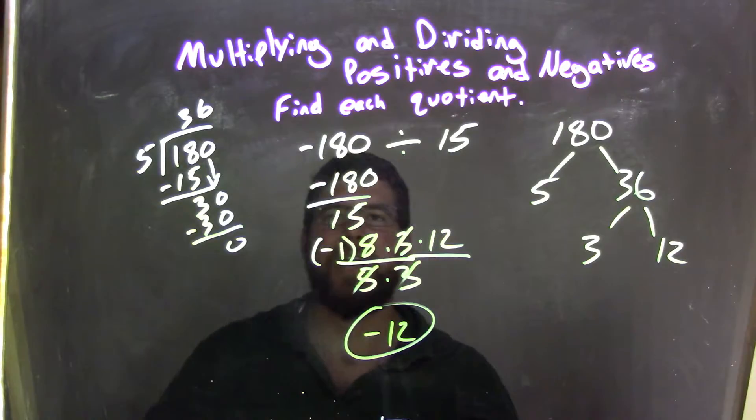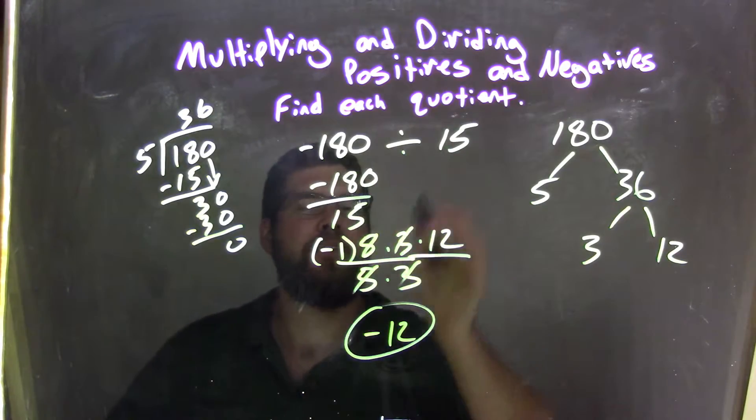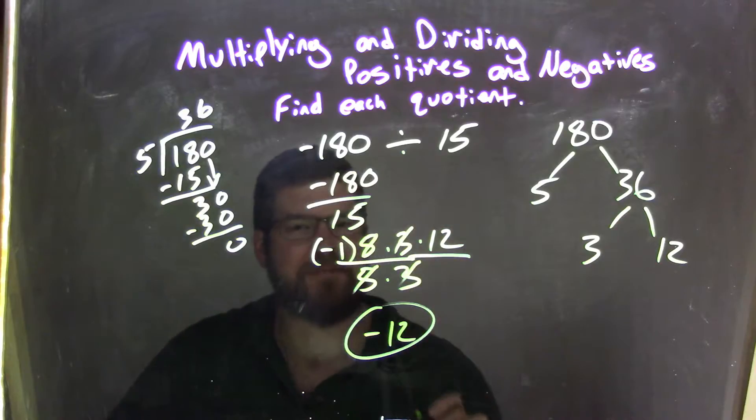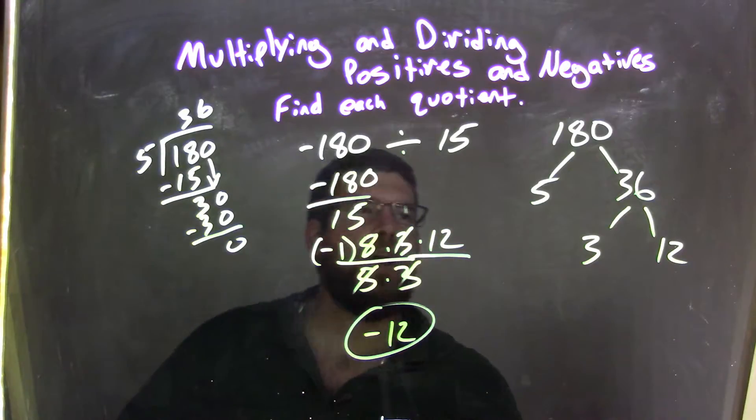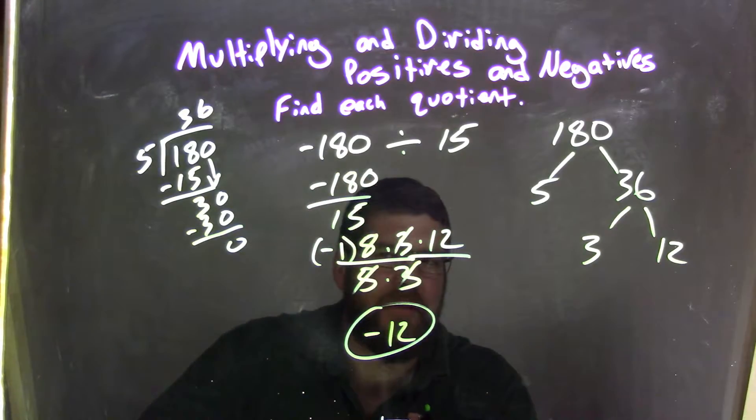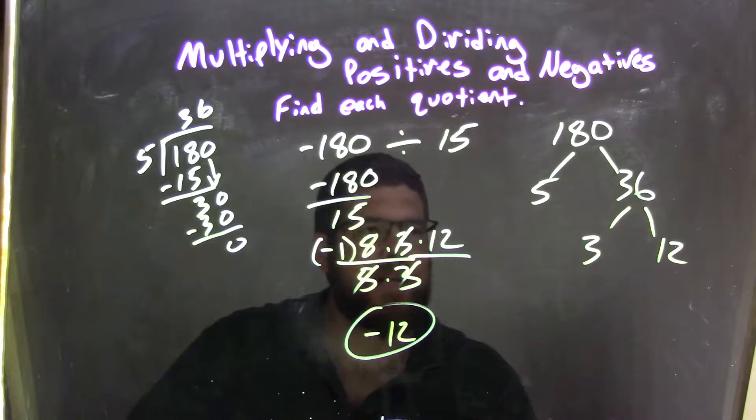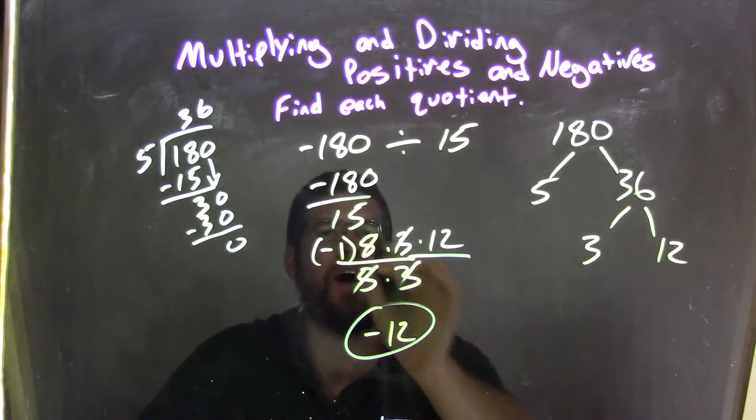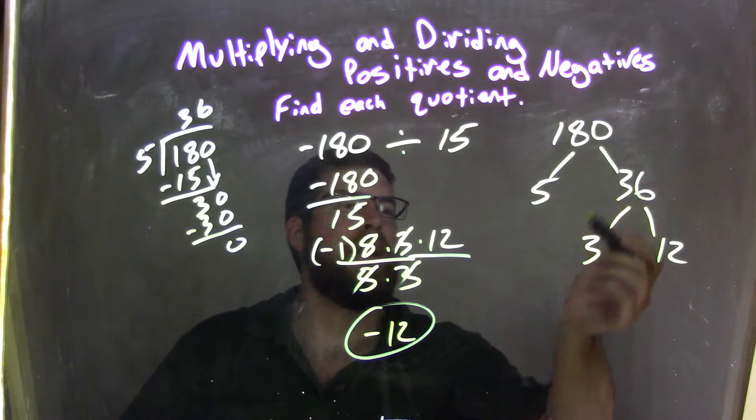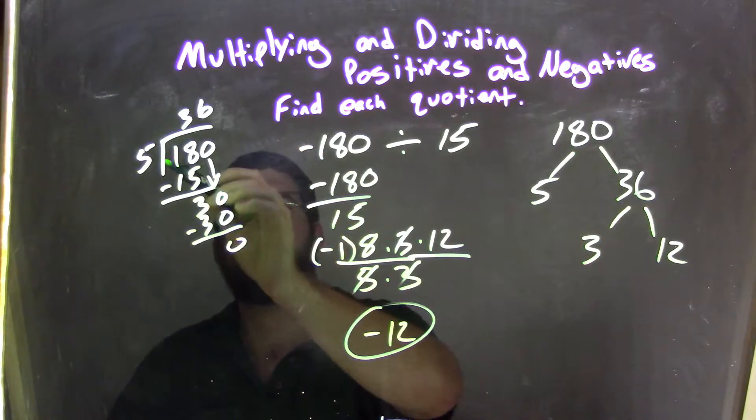So again, let's recap. We have negative 180 divided by 15. I like to write that as a fraction. Negative 180 over 15. 180, I didn't deal with the negative, but 180, I knew I could break down. And I started with a 5, because I knew 5 went into 15. 5 into 180.